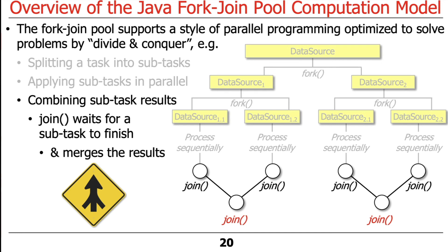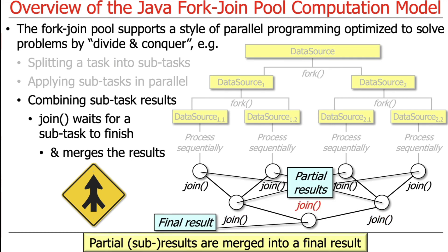Join also merges results from subtasks recursively, so you get a bunch of partial results that are merged into a final result, which is returned back to the user. That's why this is basically divide-and-conquer: you divide things up, do a bunch of processing, and then merge everything back. It's also somewhat similar to the map-reduce paradigm, which is very popular in distributed computing, and we'll talk later about the differences between ForkJoin and map-reduce.